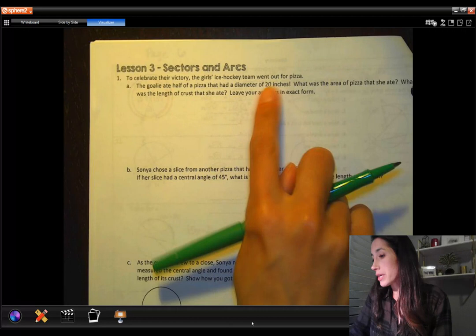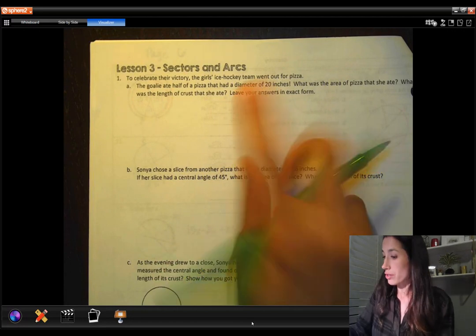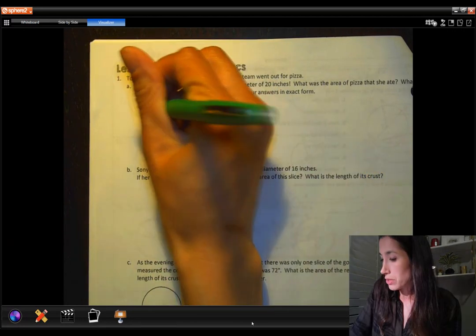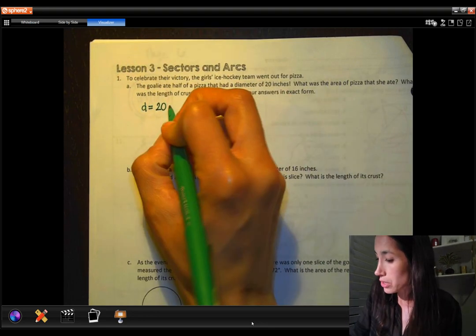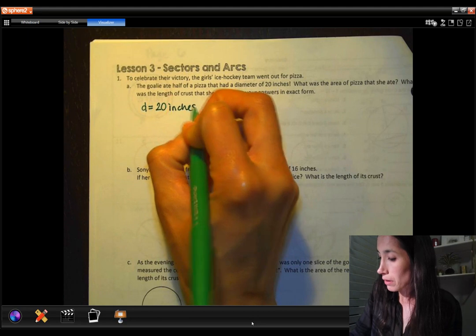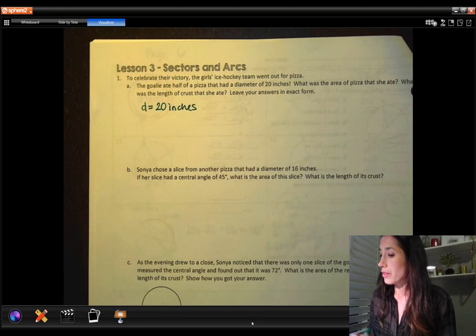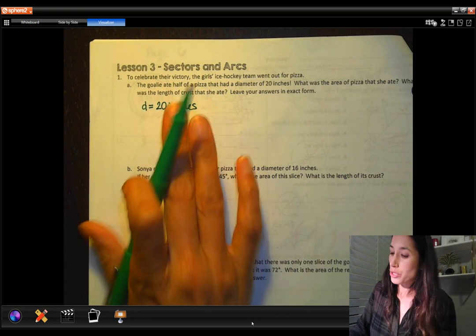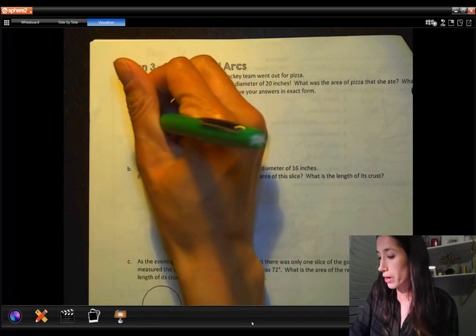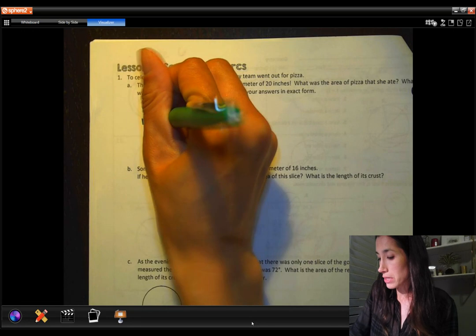But our radius was 20 in our warm-up, so now our diameter is 20. Let's write our key pieces of information. Diameter is 20 inches and the goalie ate half of this pizza. We want to know the area of the pizza that she ate. If our diameter is 20, we know that our radius is half of that, so our radius is 10 inches.